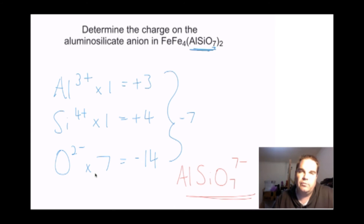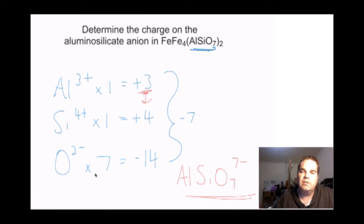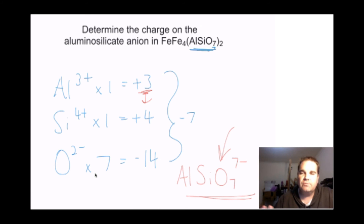Each aluminium just has one less positive charge than a silicon, so every aluminium you substitute in just decreases the overall charge by 1. This is why aluminosilicates are used — increasing the negative charge means they can more readily attract metal ions.